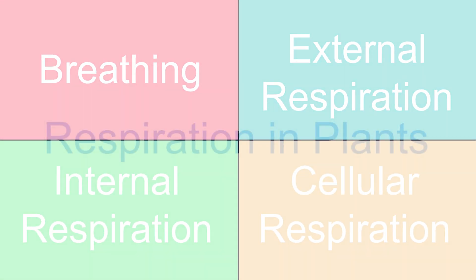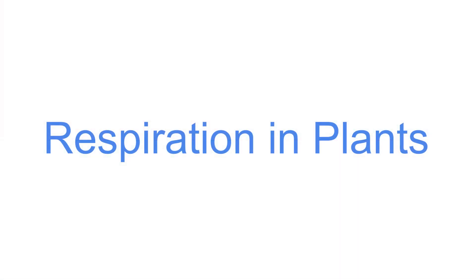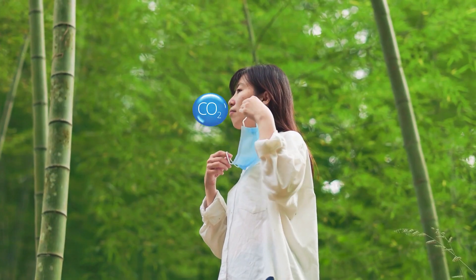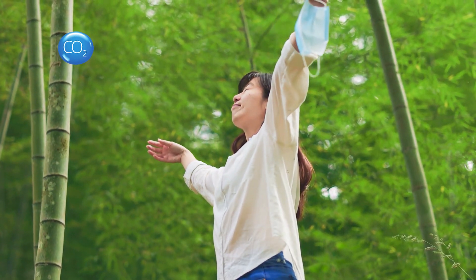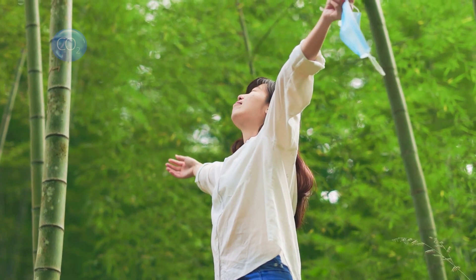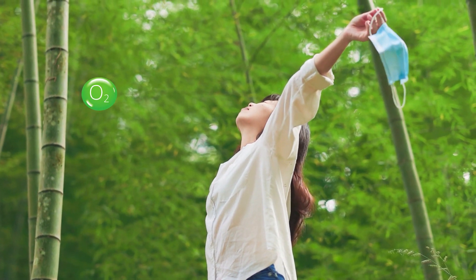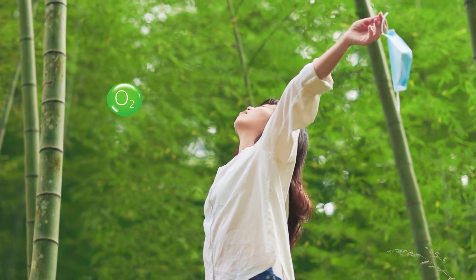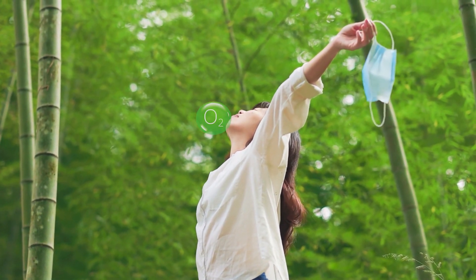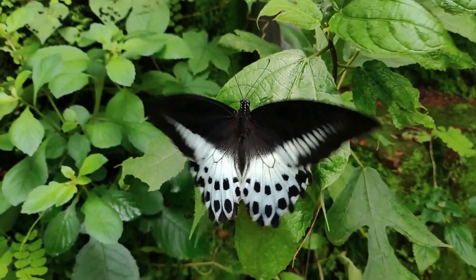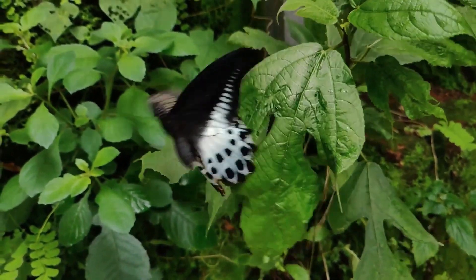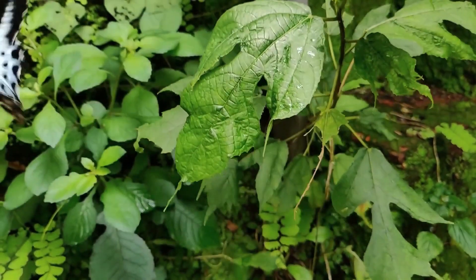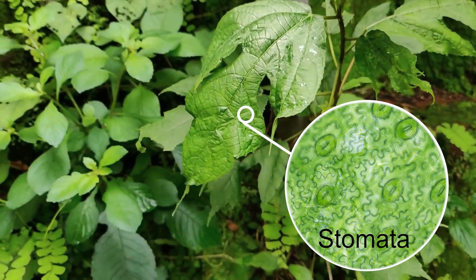Plants, like humans and animals, need to breathe too. However, the exchange of gas is different. They take in carbon dioxide that other animals give off, and they give up oxygen for our use. In plants, the exchange of gases takes place in the stomata of leaves and in young stems.